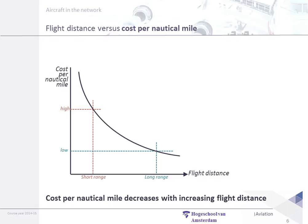It also means that the longer the distance is, the higher the margin and the higher the revenue per nautical mile. Just check a flight from Istanbul to Amsterdam and from Istanbul to John F. Kennedy — normal prices, not special offers — and compare them. The ticket price to John F. Kennedy, New York, is far less in relation to the cost compared to the one to Amsterdam, simply because of this structure.